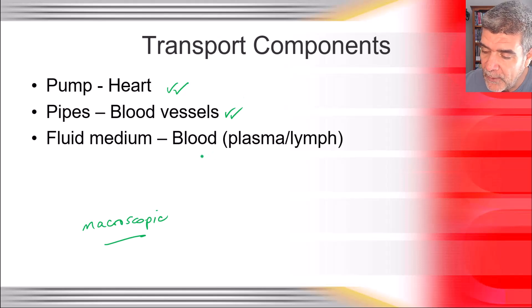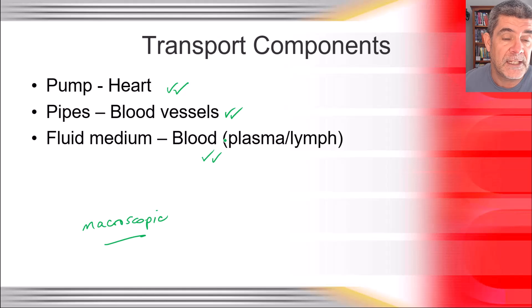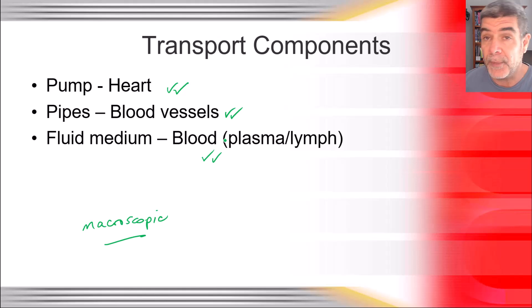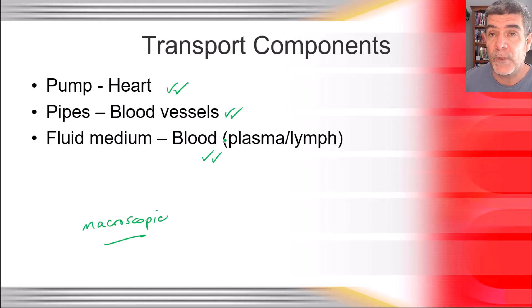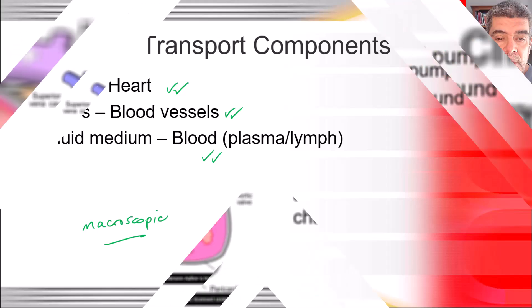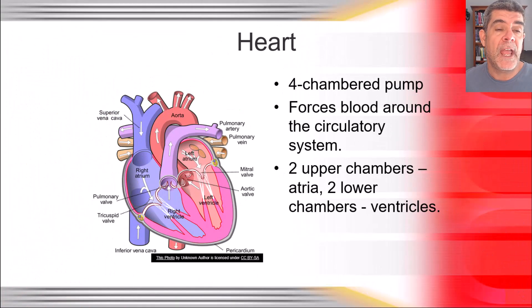We can see blood, but we can't necessarily see the components within it — the red blood cells, the white blood cells, the platelets and the plasma — as well as any of the other chemical substances that are travelling through the blood.